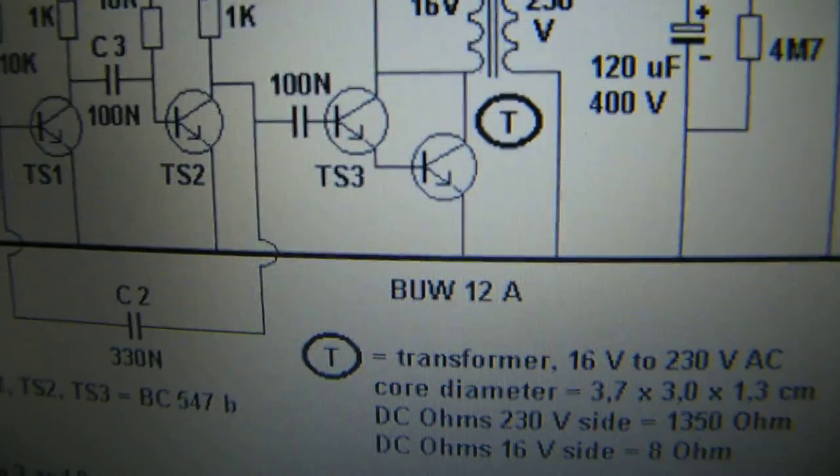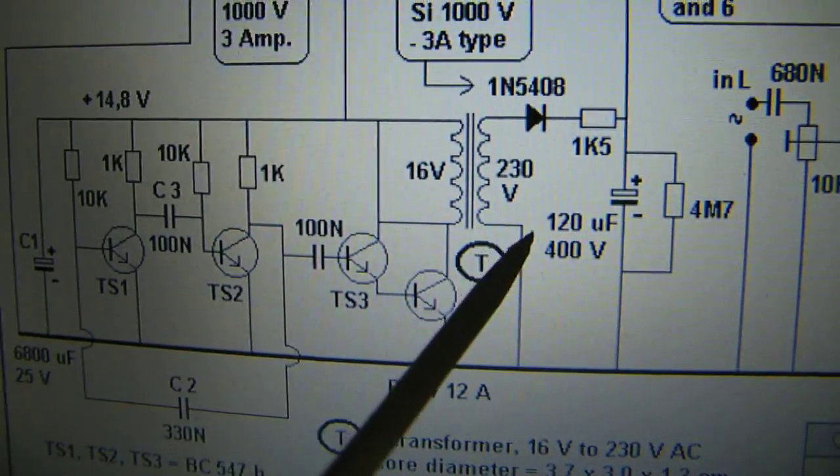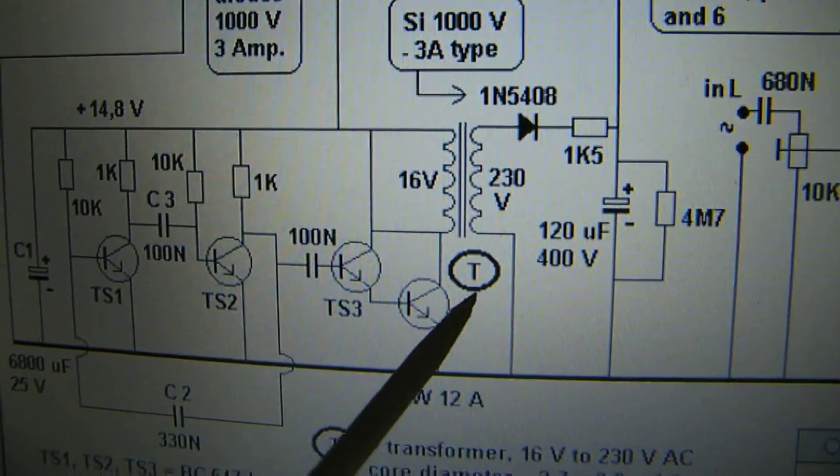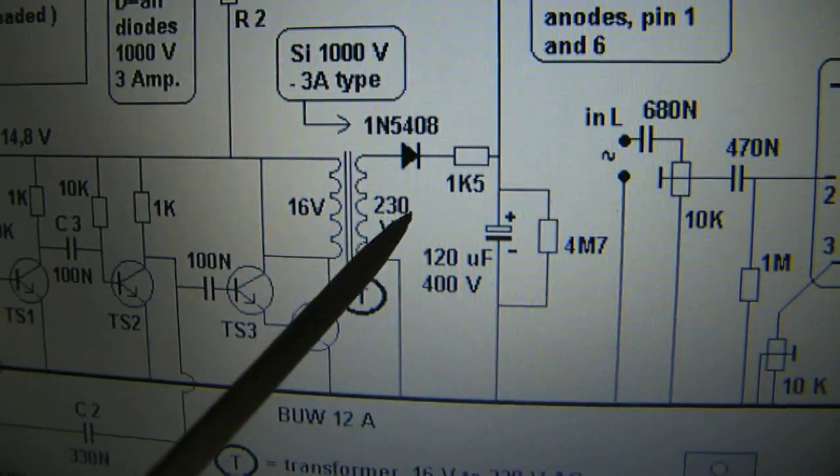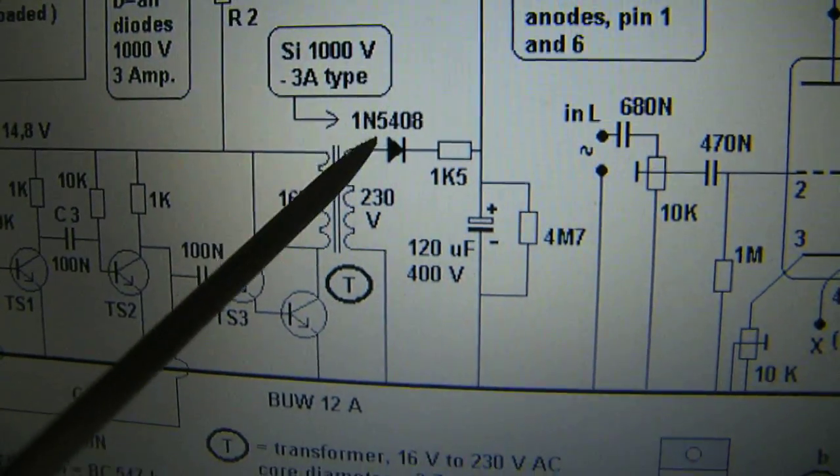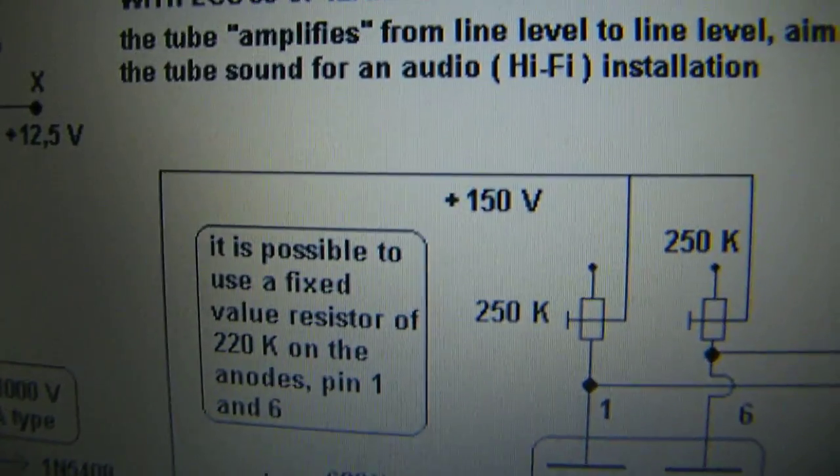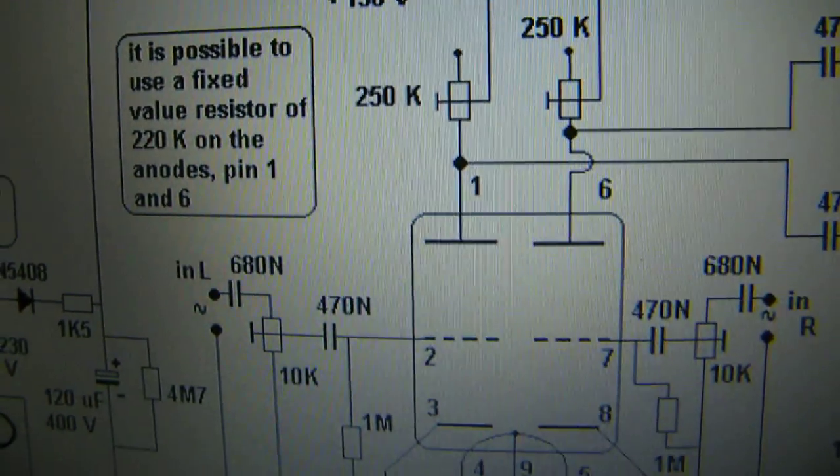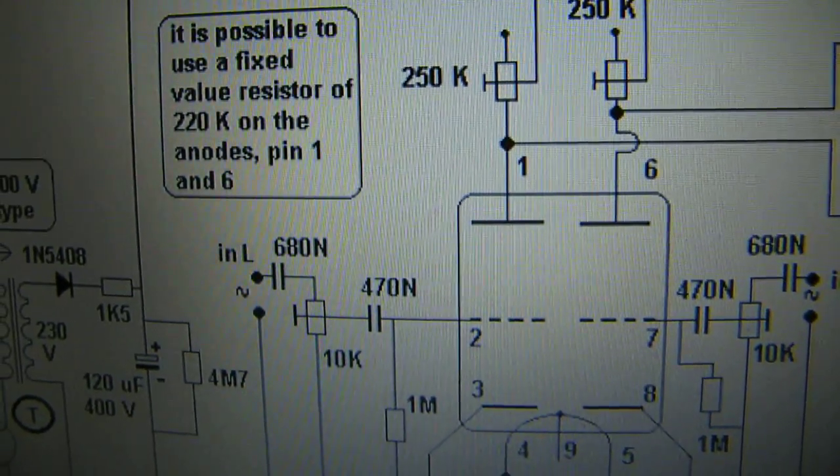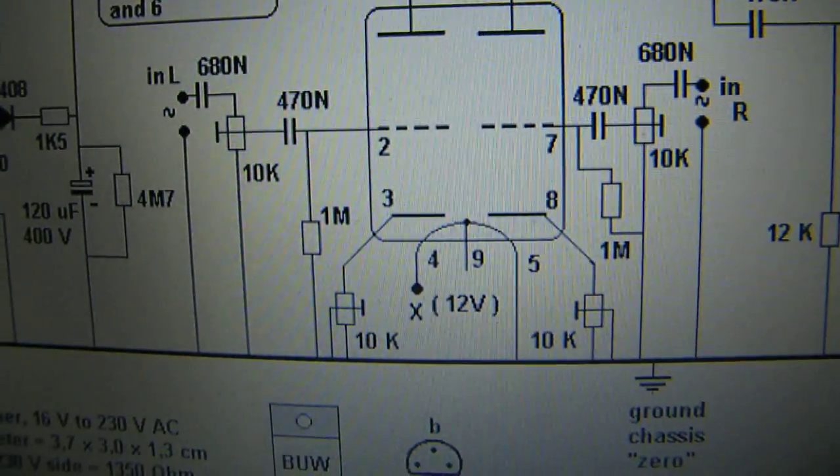And here that multivibrator is driving a power transistor, the BUV12A, that drives a reverse supply transformer, rectification by this diode, and here we have now a high voltage from 150 volts that drives the triode tube, a two times triode tube.